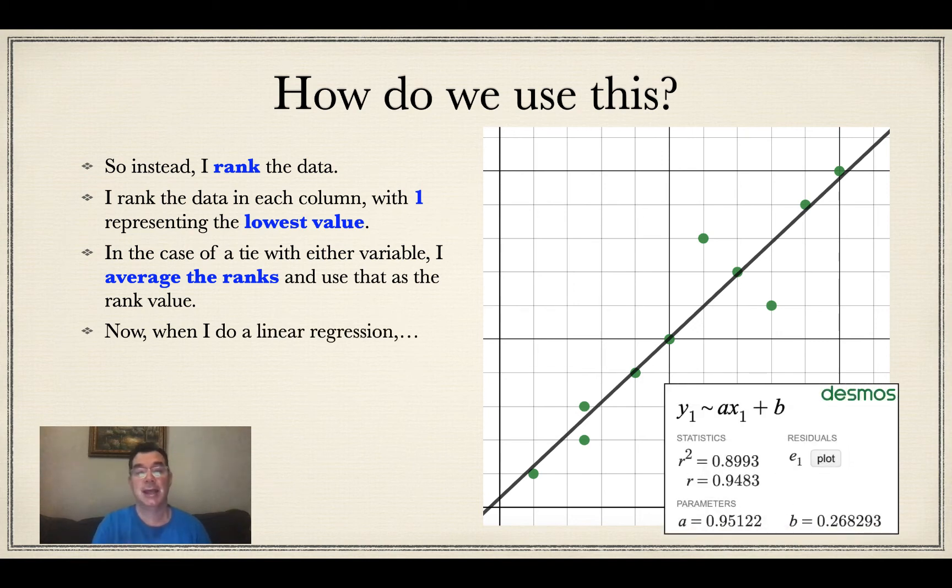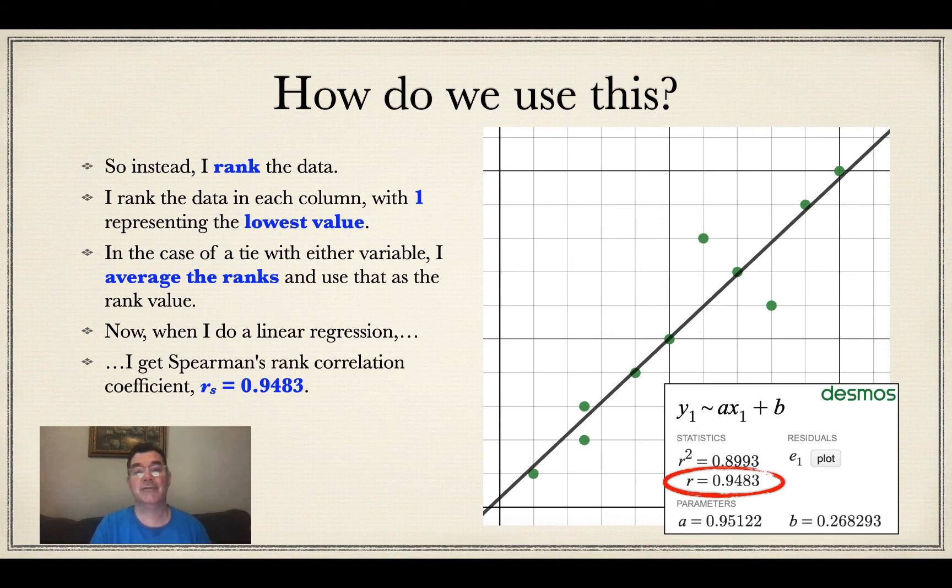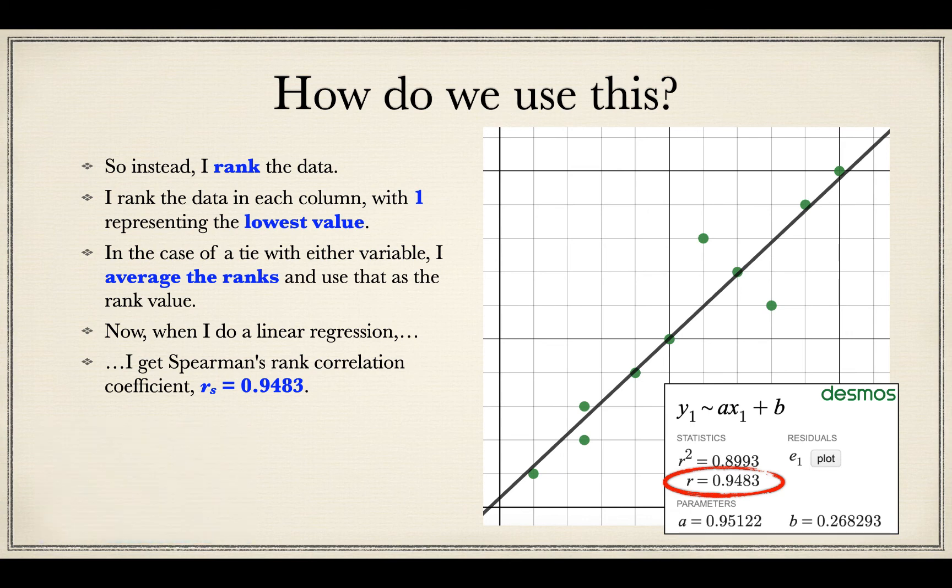So I do a linear regression now, and what I notice is I get r equals 0.9483, which is much better. That is much closer to a value of one, which would represent a perfect fit. So I get a Spearman's rank correlation coefficient of 0.9483, and what that means is that there is a very strong upward trend, even though it might not be linear.